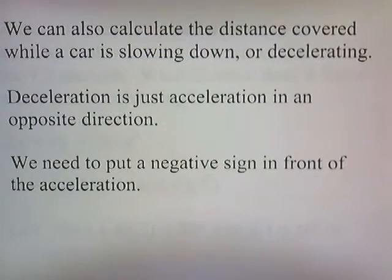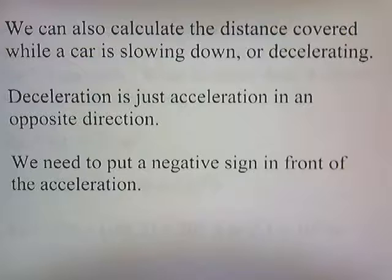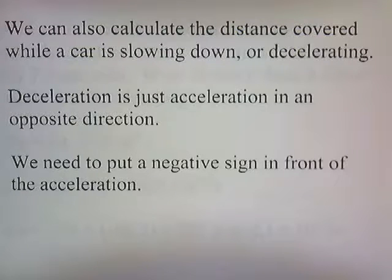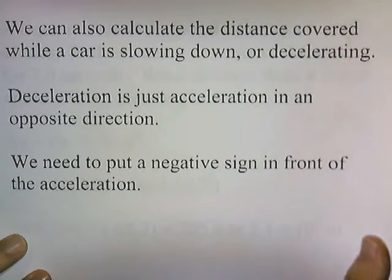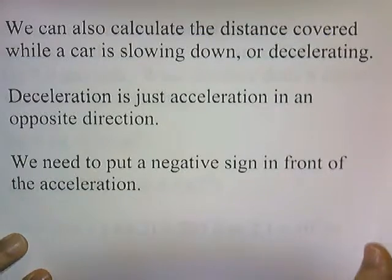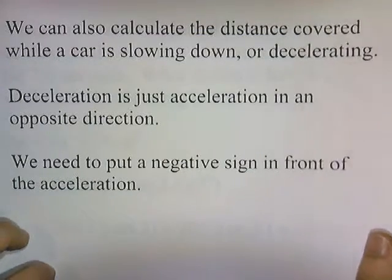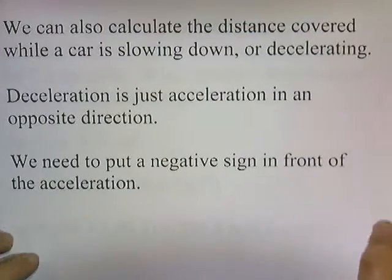We can also calculate the distance covered while a car is slowing down or decelerating. Deceleration is just acceleration in the opposite direction. We need to put a negative sign in front of acceleration if we have an object that is slowing down. So when we solve these problems and they give us the acceleration for an object that's slowing down, we put a negative sign in front.